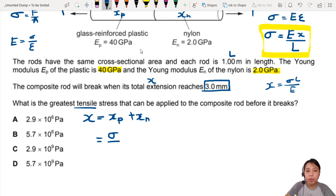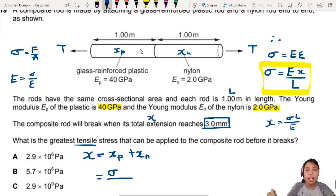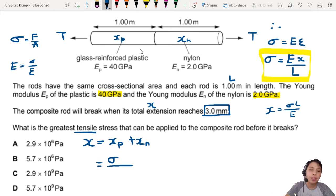So we plug in for plastic - that will be the stress over L. What is L? Original length for that component - there's 1 meter. E for plastic is 40 gigapascals. Then we do the same thing for nylon as well. So nylon here will be sigma over 2 times 10^9 and this equals to 3 millimeters - that's the maximum it can go.